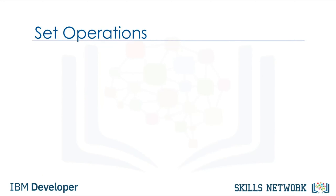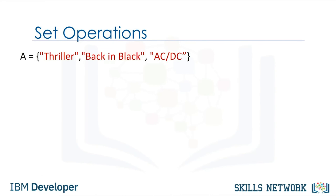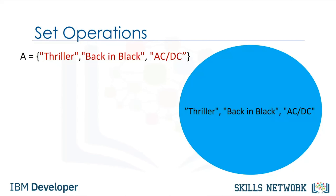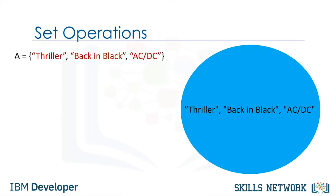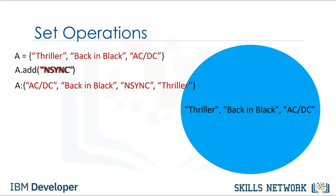Let's go over set operations. Consider set A — let's represent this set with a circle, which can be part of a Venn diagram. A Venn diagram is a tool that uses shapes to represent sets. We can add an item to a set using the add method — we put the set name followed by a dot, then the add method. The argument is the new element we would like to add, in this case in sync. The set A now has in sync as an item.